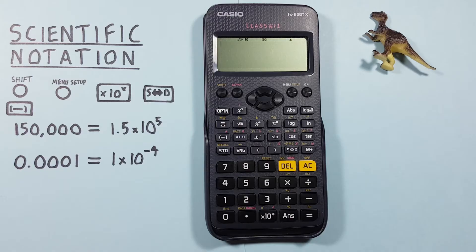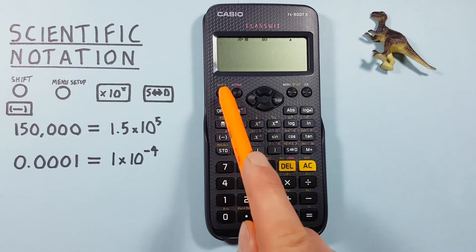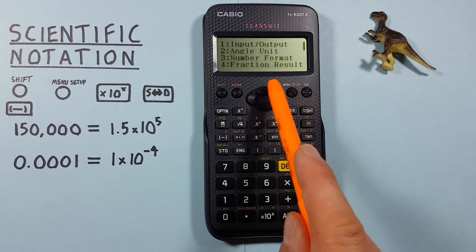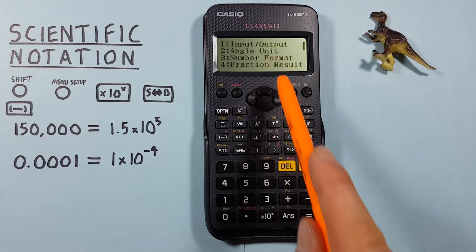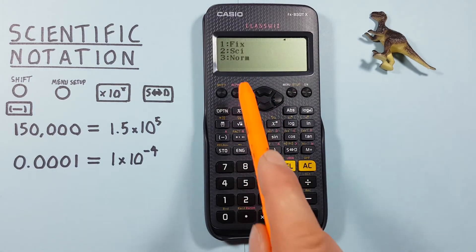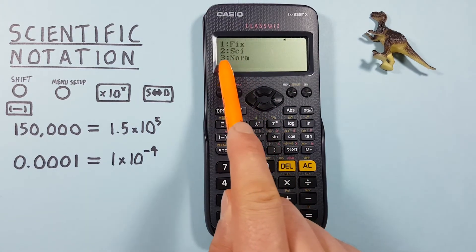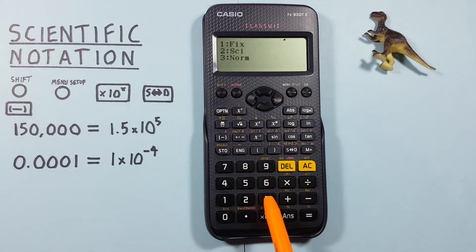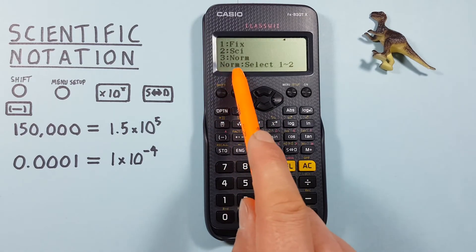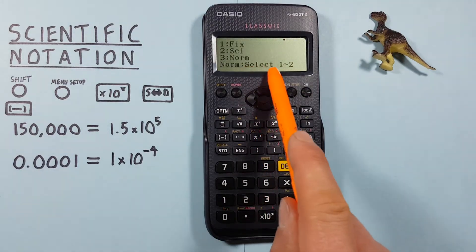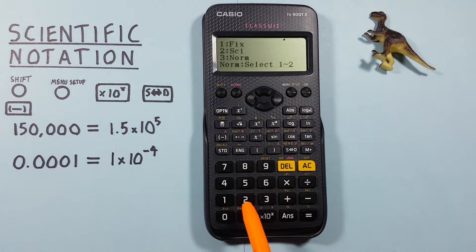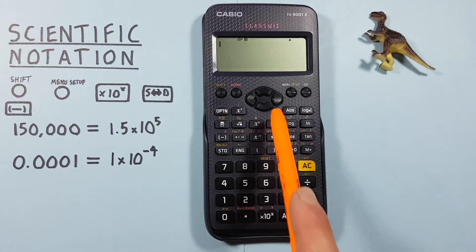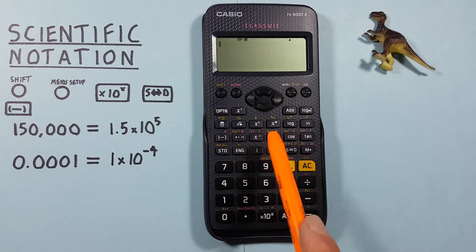If we're done with this and want to go back to normal mode, we can do that by pressing shift menu, choosing number three for number format, and then choosing number three for normal mode. It'll ask us to choose normal mode 1 or normal mode 2. We want 2 in this example. We're now back to standard mode.